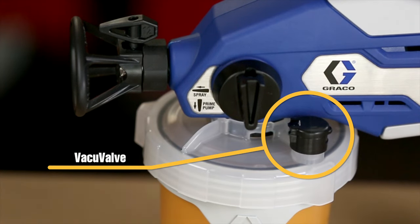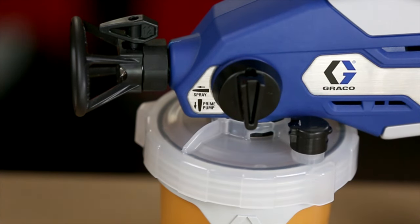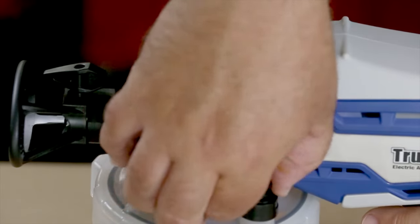The vacuum valve is an important part of your new sprayer. It's used to evacuate the air out of the flex liner. Open the vacuum valve cap.